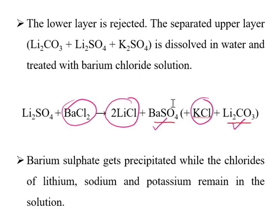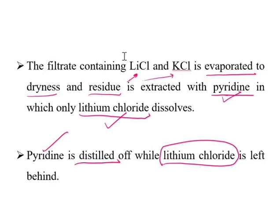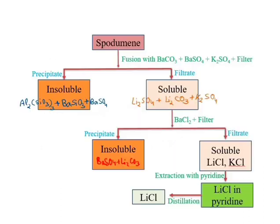After filtering, the filtrate contains LiCl and KCl in solution. This solution is evaporated to dryness, and the residue is extracted with pyridine. Only lithium chloride dissolves in pyridine. The lithium chloride–pyridine mixture is then distilled, the pyridine is removed, and pure lithium chloride is obtained.